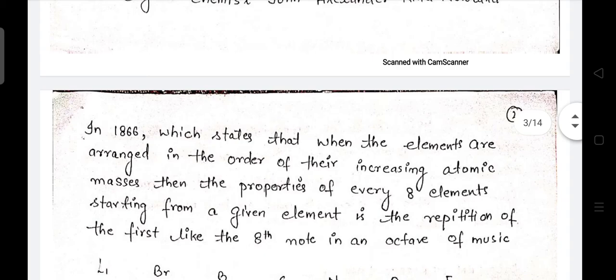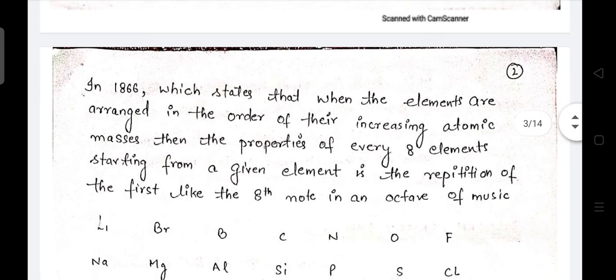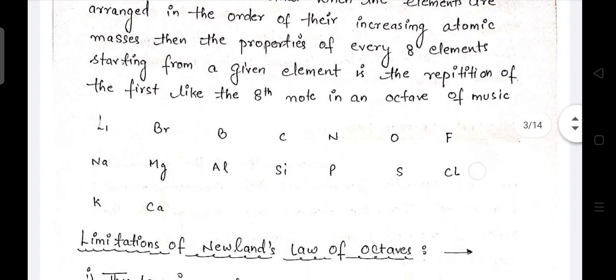Next is Newland's Law of Octaves. Starting from a given element, the properties of every eighth element are a repetition of the first. Every eighth element's properties keep repeating. Just like musical notes - sa re ga ma pa dha ni, and then sa comes again - it repeats in the same way. Their properties also kept repeating.